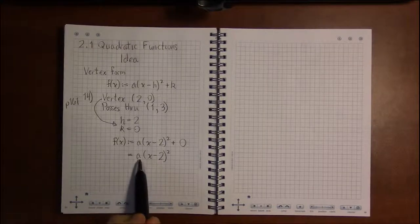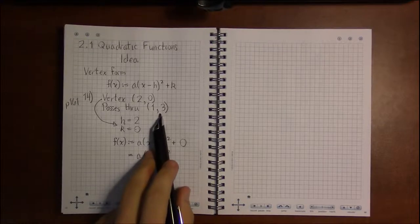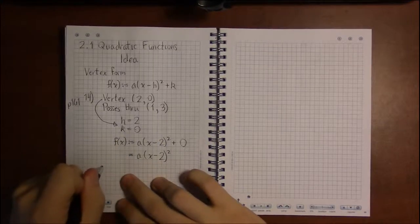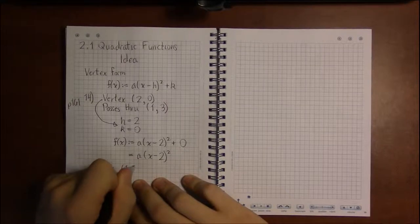Well, to find out what this number is, we use the second piece of information. We use the point (1, 3) to find a.